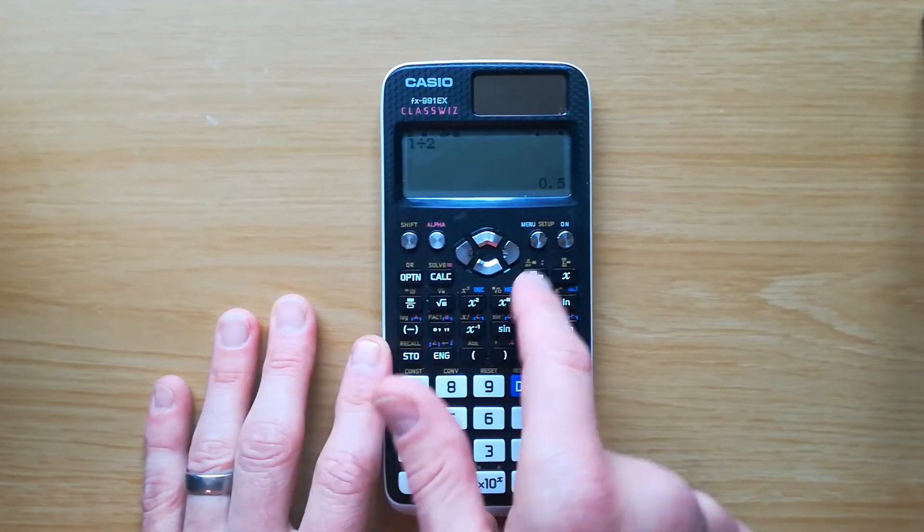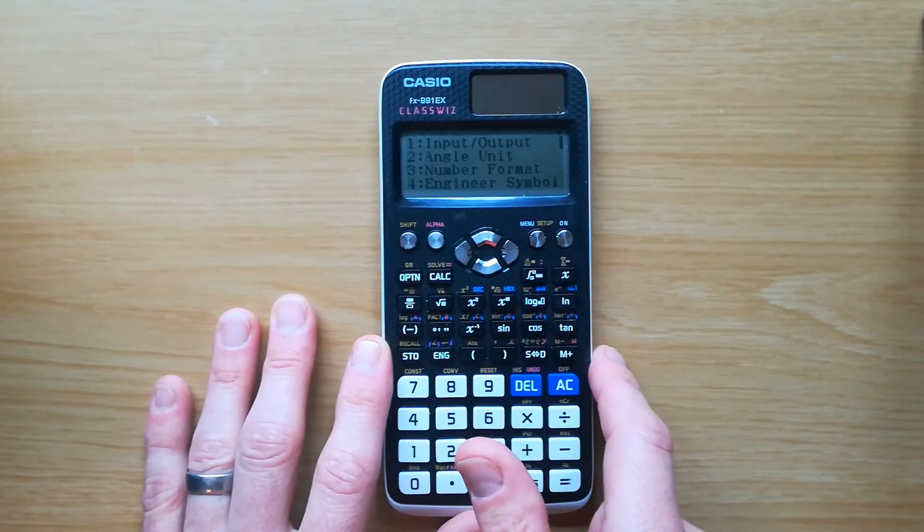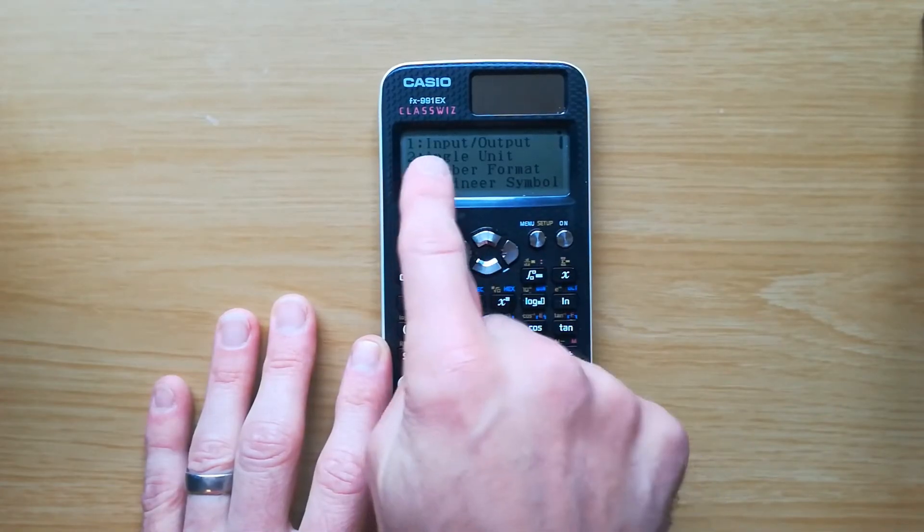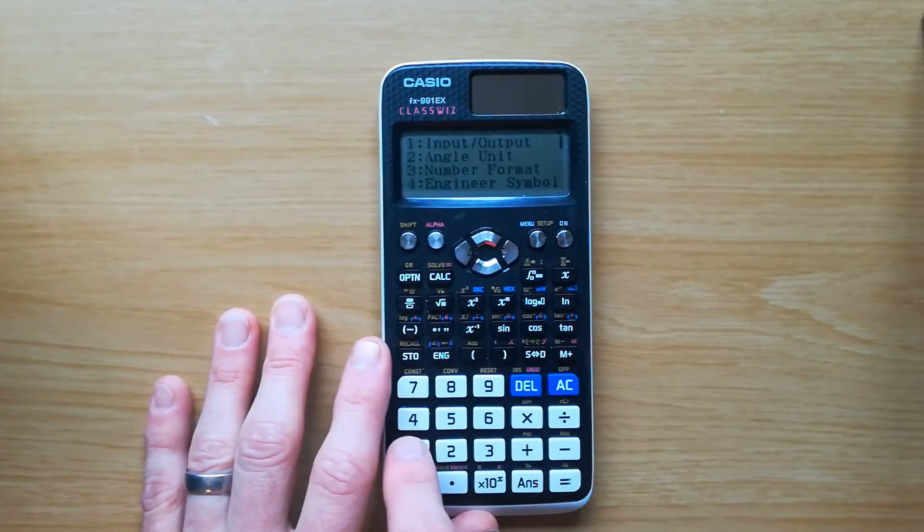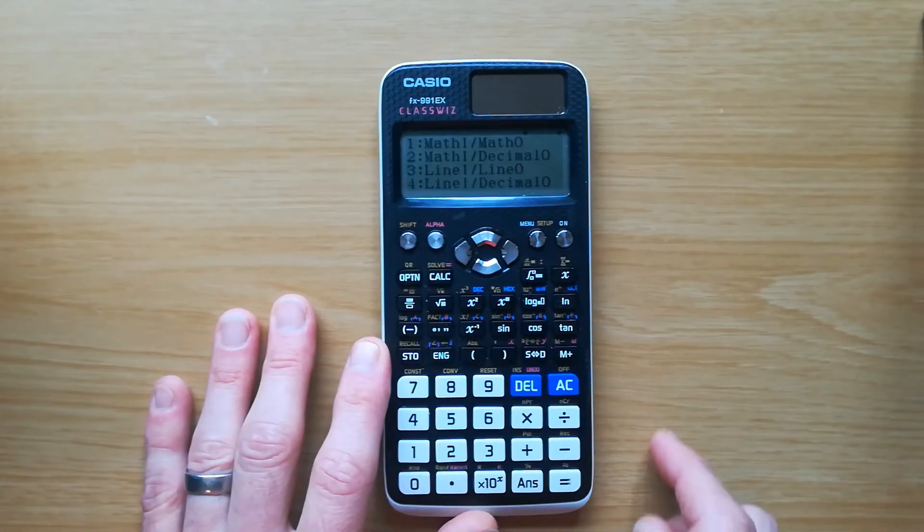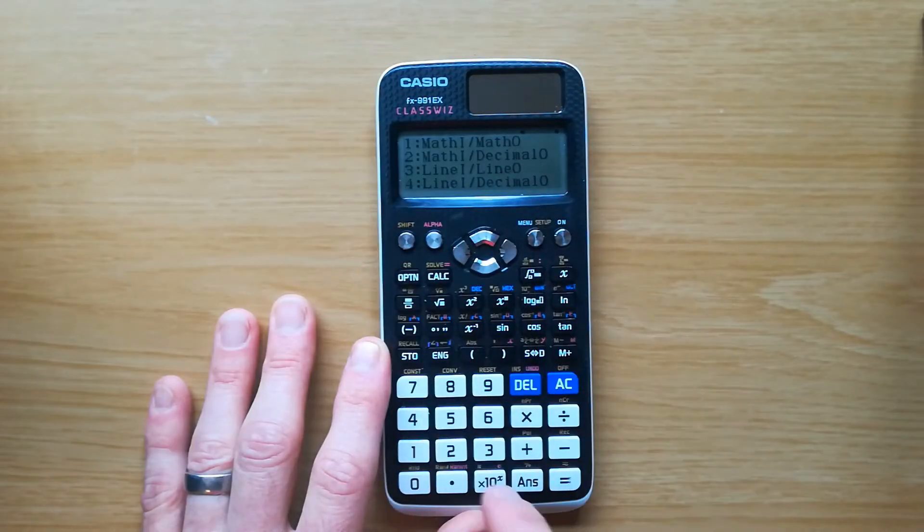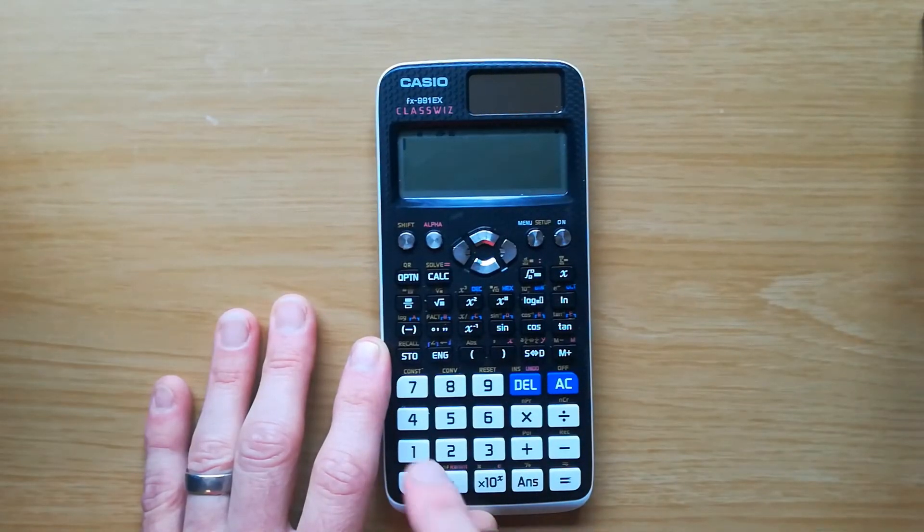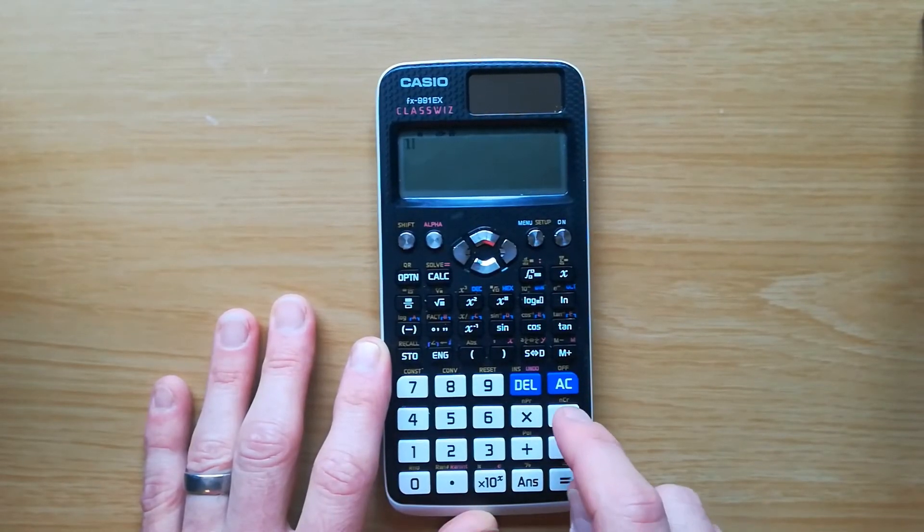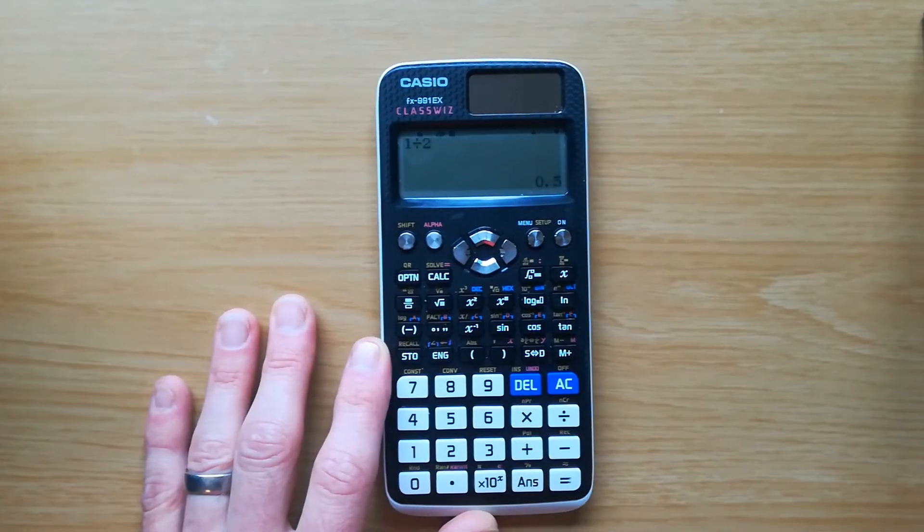So to get to the setup we need to press shift and then that button. And we want number one, input output, and then we want to select number two, which is math in decimal out. So now if I do the same calculation, 1 divided by 2, I get 0.5.